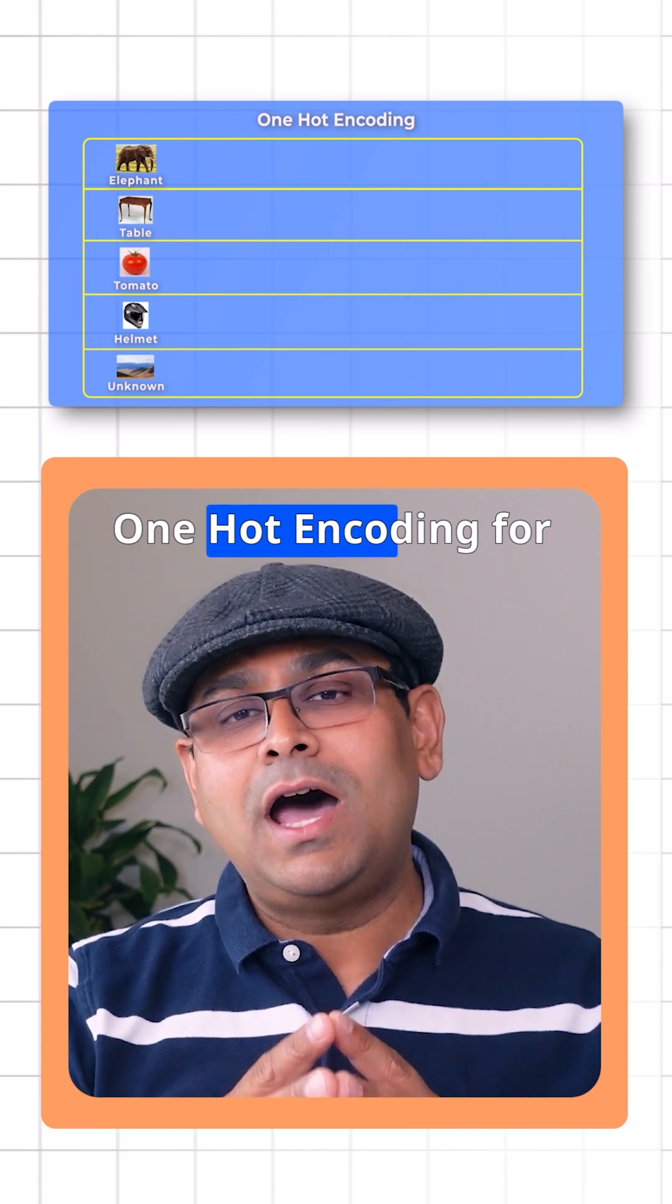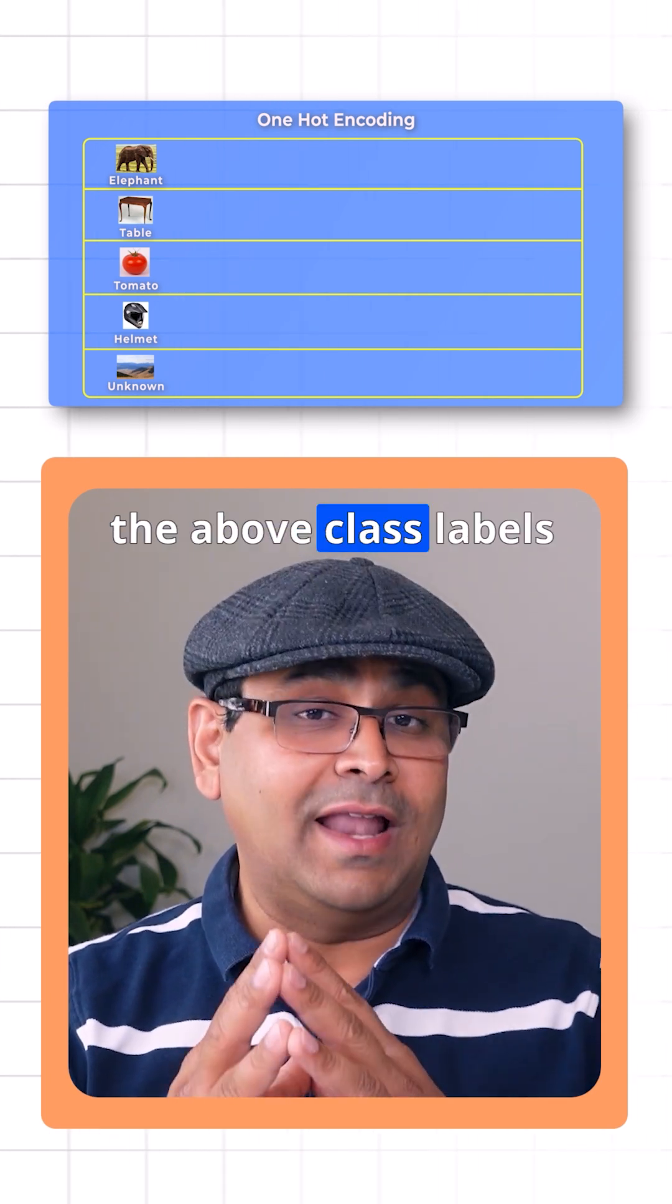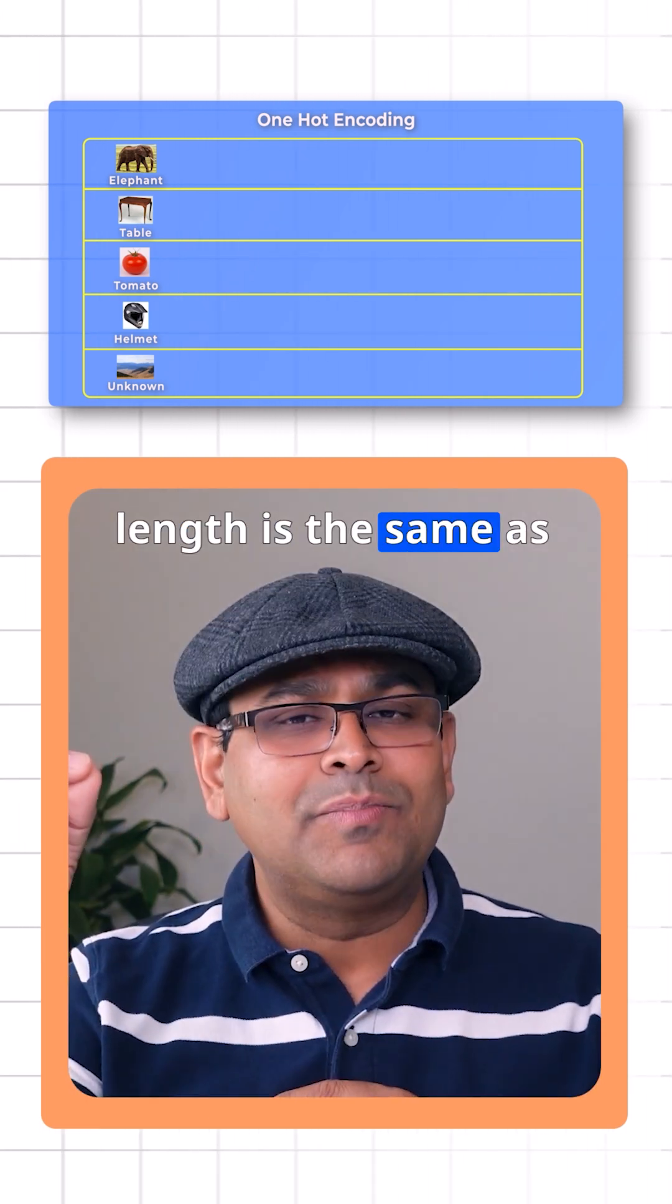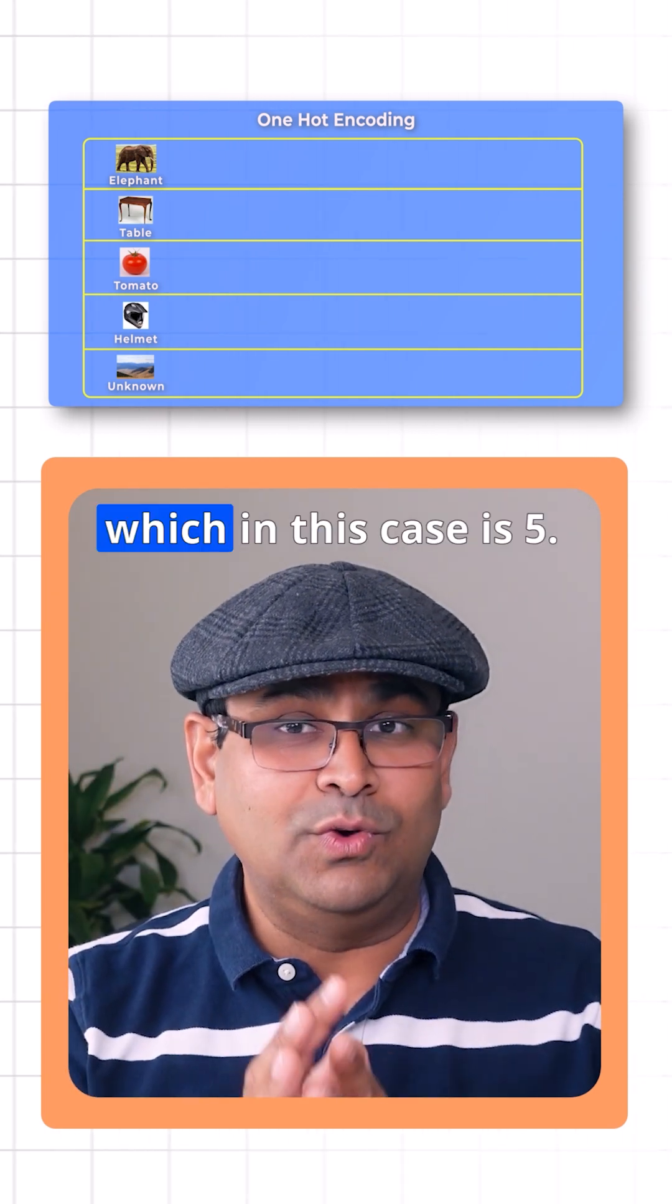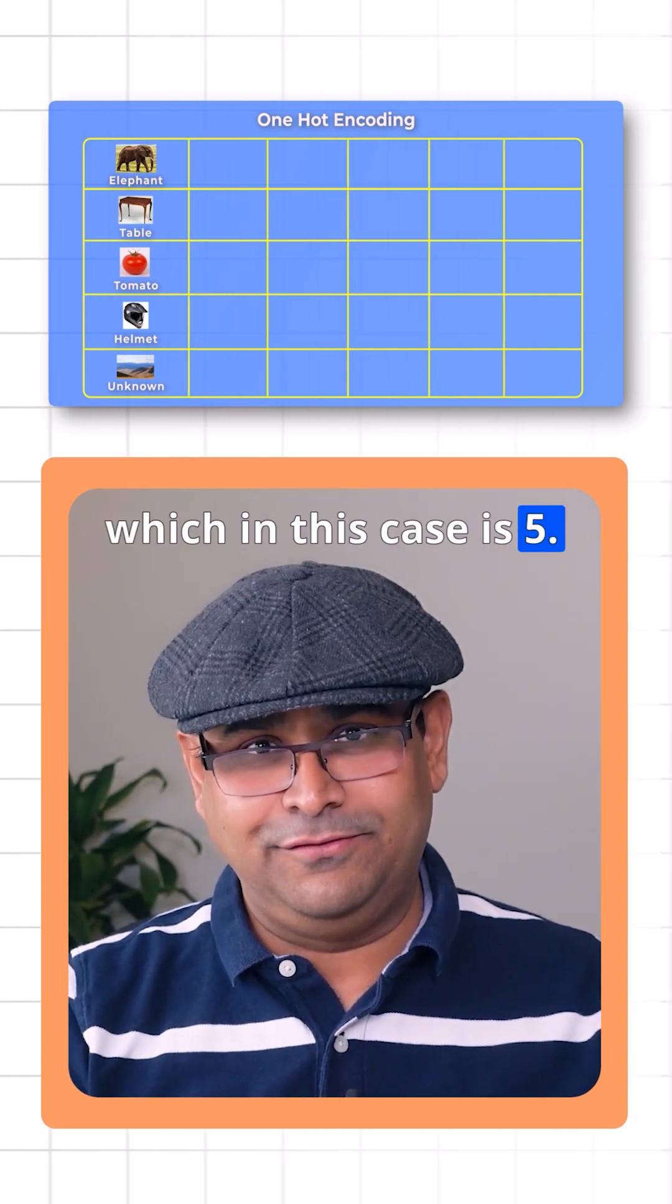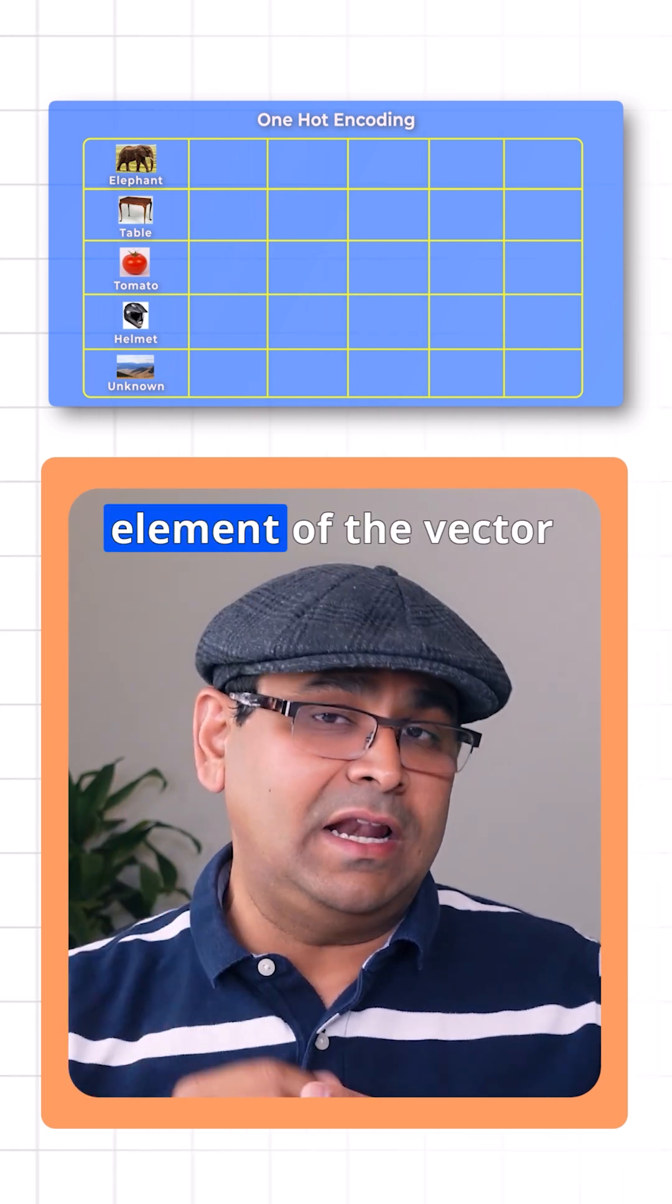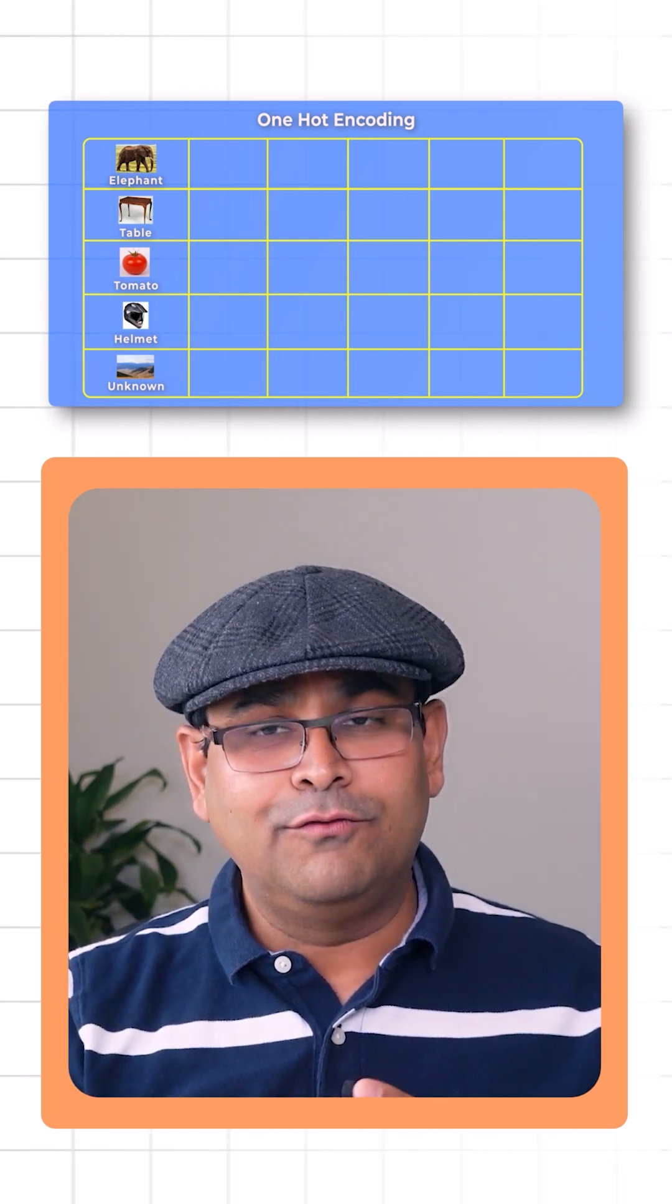The one-hot encoding for the above class labels will use a vector whose length is the same as the number of classes, which in this case is five. In this representation, we set only one element of the vector to one for a particular class.